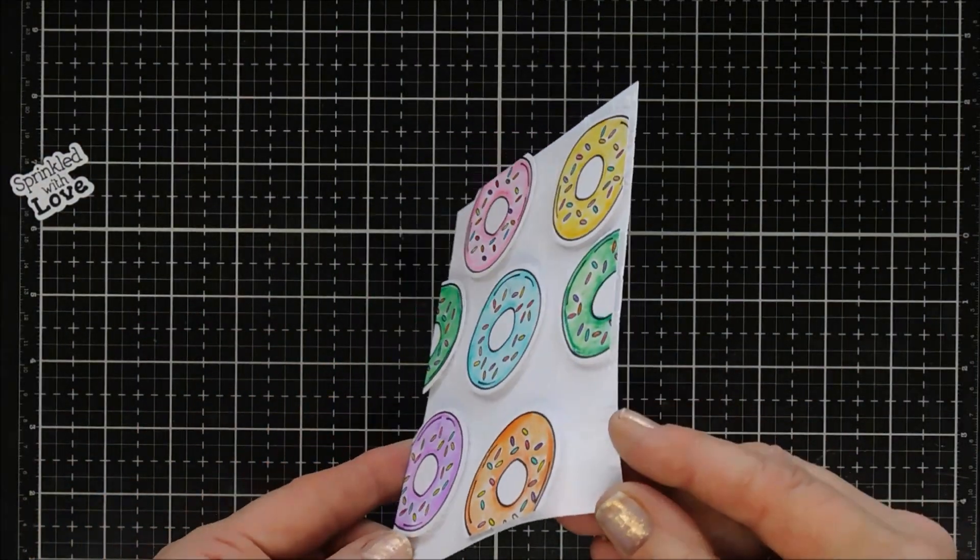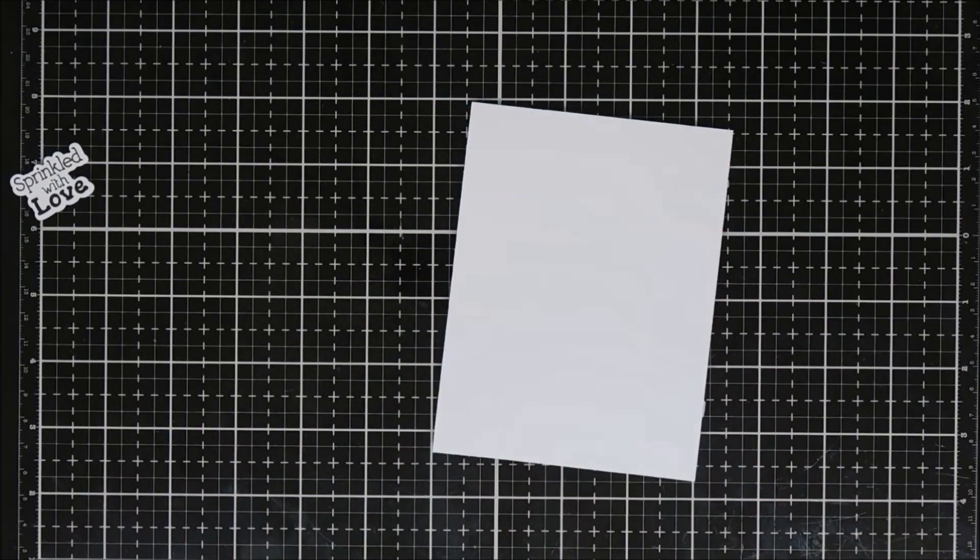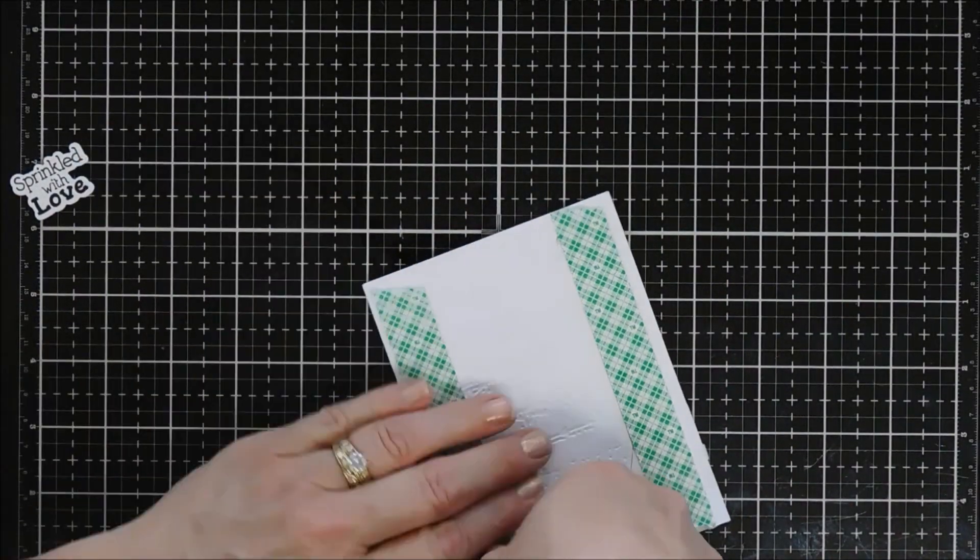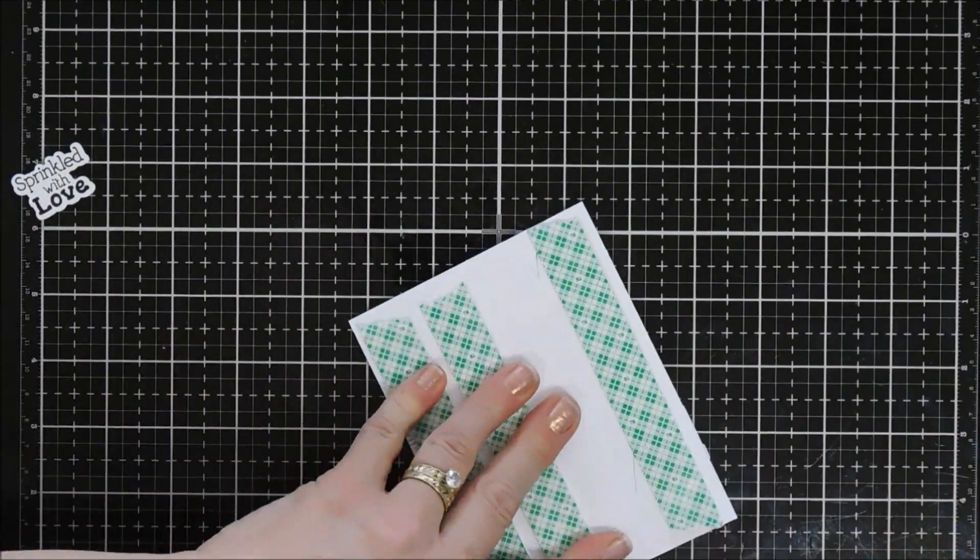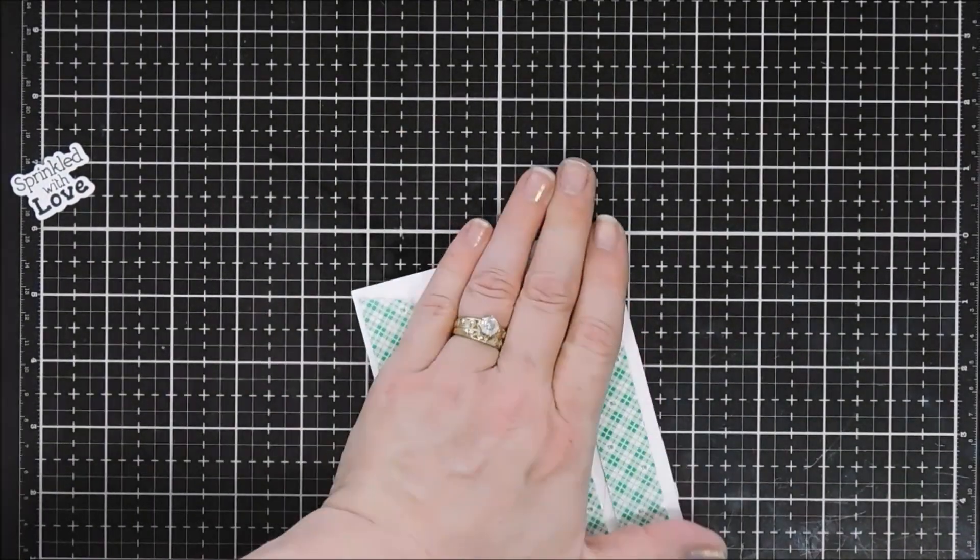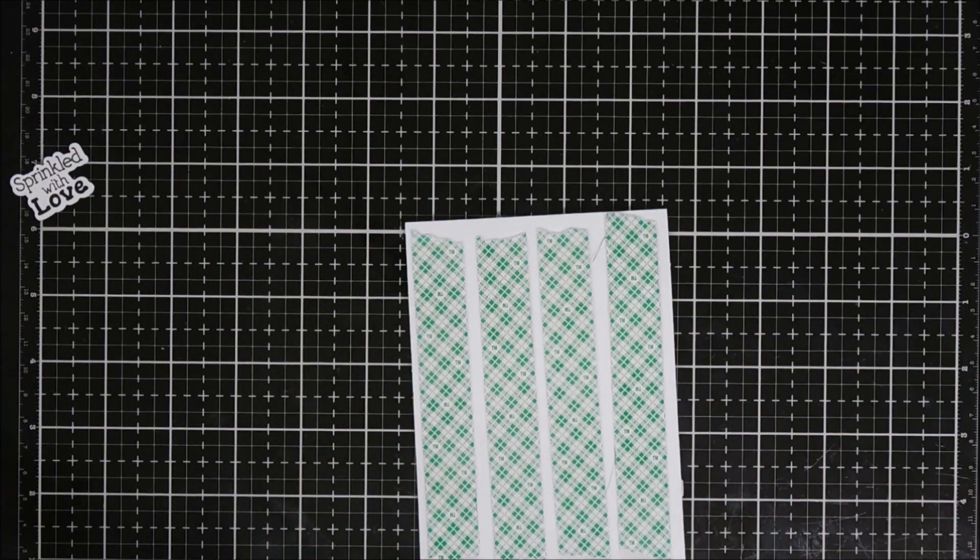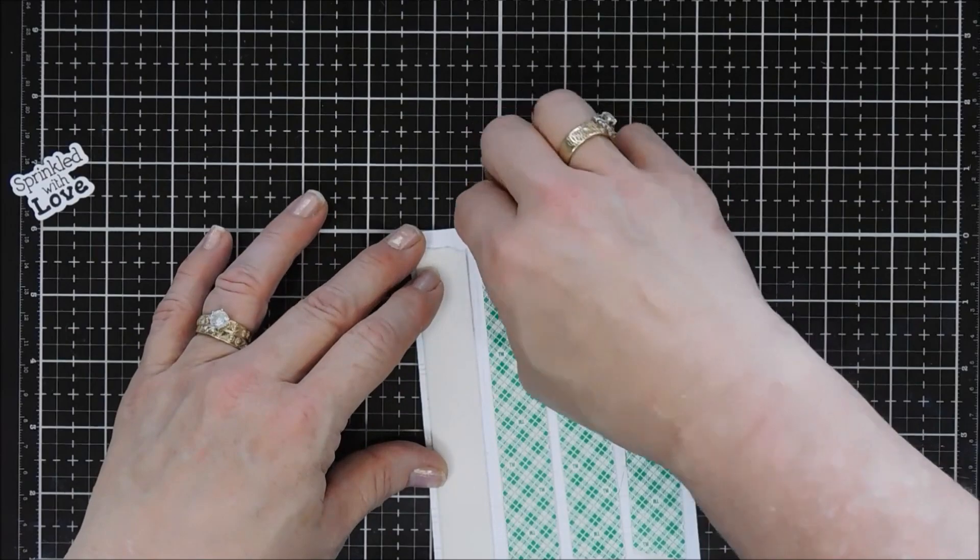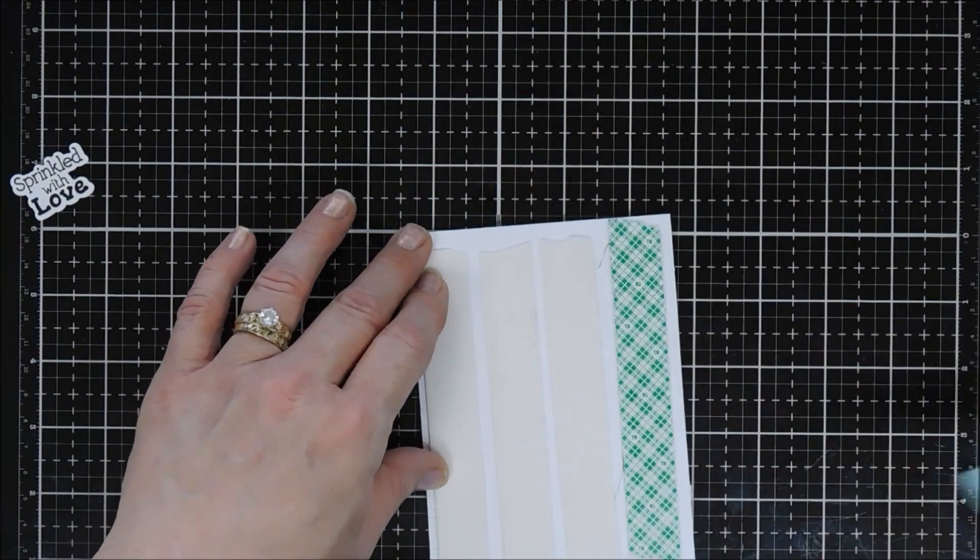We're going to flip this panel over and I'm going to add some 3M foam tape behind here. This panel is going to go on a standard white A2 size card base which measures 4.25 by 5.5 inches and it's a top-folding base. We'll just remove the release paper and add that.